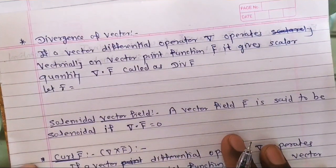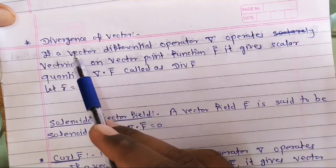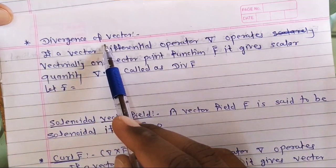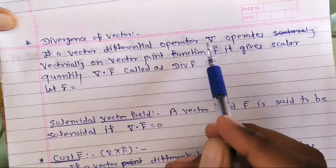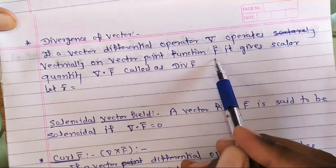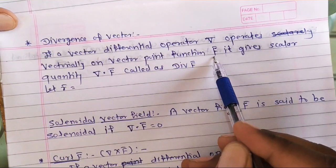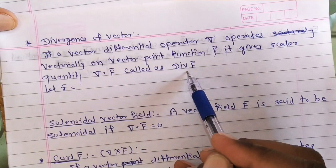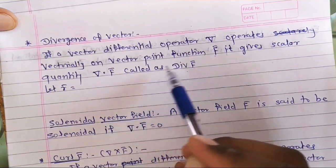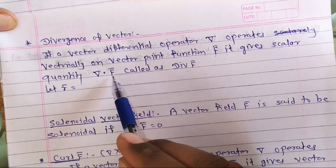In the last video we already covered gradient of scalar point function phi, in which directional derivative was done. Now today we are going to start divergence of a vector. What is divergence of a vector? If the vector differential operator del operates via dot product on vector point function F̄, it gives a scalar quantity, because del is a vector and F̄ is a vector, so del dot F̄ gives a scalar quantity called the divergence of F̄.